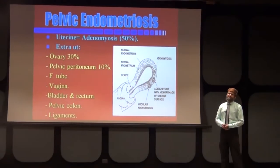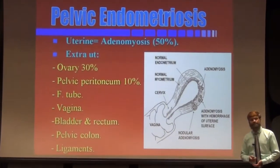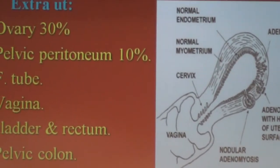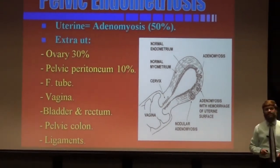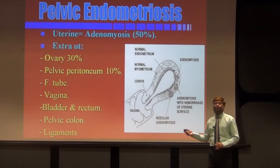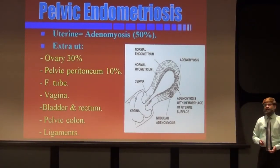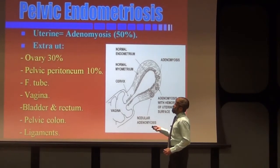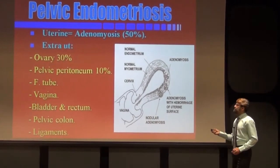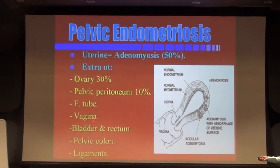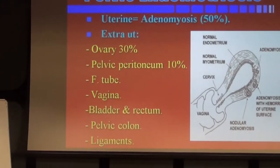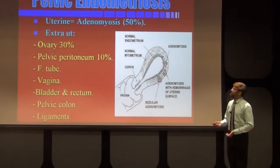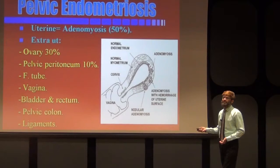Endometriosis internal is called adenomyosis. Adenomyosis is endometriosis internal in the uterine cavity, but it is associated with the myometrium, not the endometrium itself. If it is extra-uterine, it is called endometriosis externa. In the pelvic cavity, the involvement includes the ovary at 30%, pelvic peritoneum at 10%, and other areas like fallopian tube, vagina, bladder, rectum, pelvic colon, and ligaments.